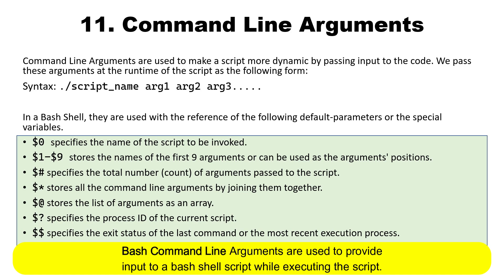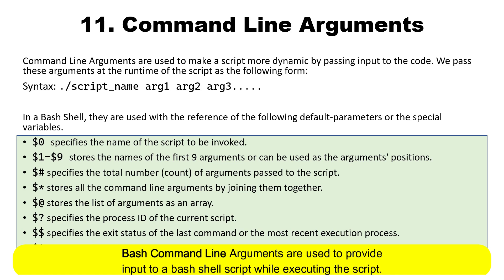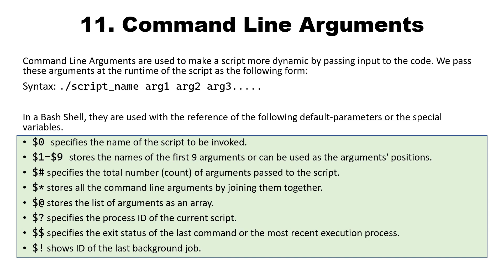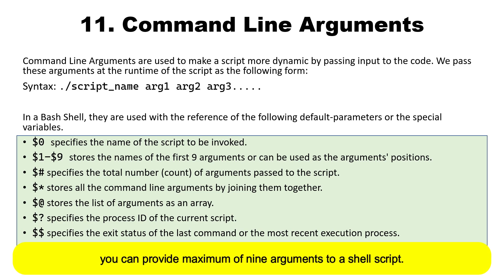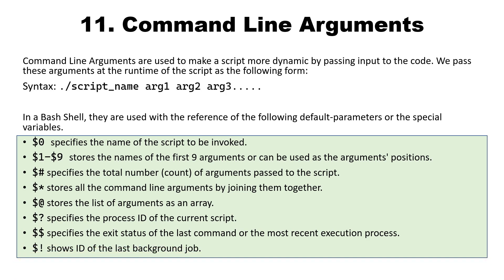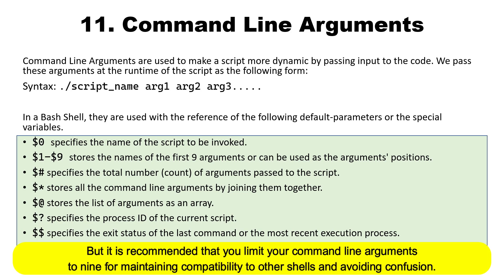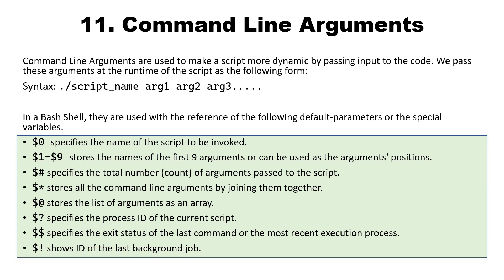These bash command line arguments are used to provide input to a bash shell script while we are executing the script. In bash shell programming, we can provide a maximum of 9 arguments to a shell script. We can provide more than 9, but when providing more than 9 arguments, we have to use curly braces. It is also recommended that we limit our command line arguments to 9 for maintaining compatibility to other shells and avoiding confusion.